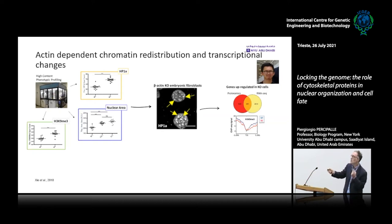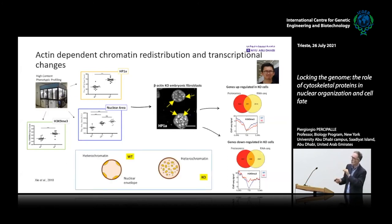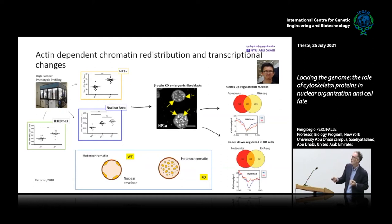ChIP-seq for H3K9 shows no changes in trimethylation at transcription start sites in upregulated genes, but for genes that are downregulated, there is an upregulation of H3K9 trimethylation at transcription start sites. Our working model is that actin is important for homeostatic regulation of heterochromatin. In the presence of actin, you have normal heterochromatin segregation at the nuclear lamina. In the absence of actin, you have essentially a redistribution of heterochromatin inside the nucleus, and nuclei look bigger.